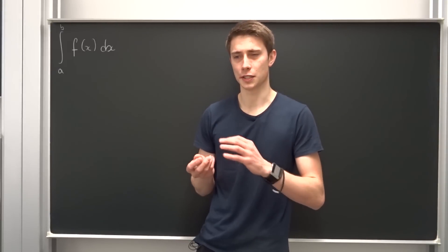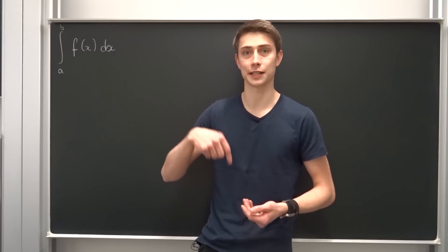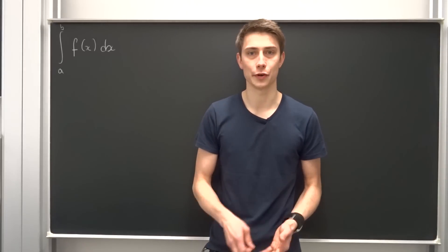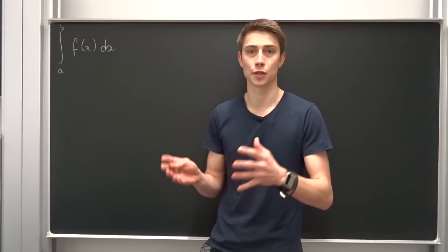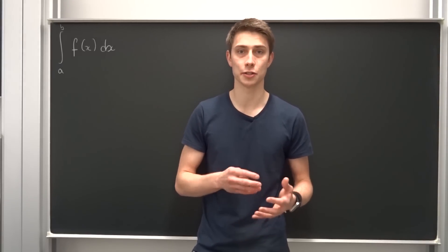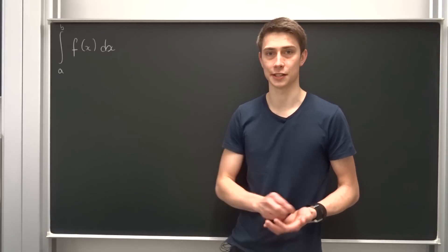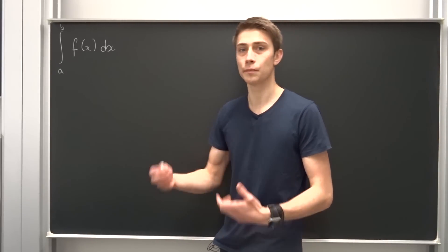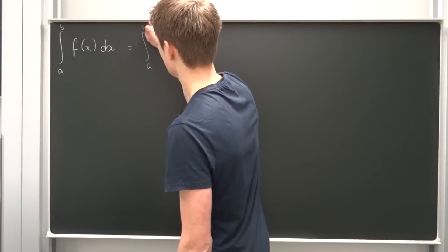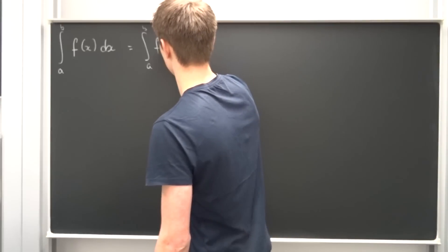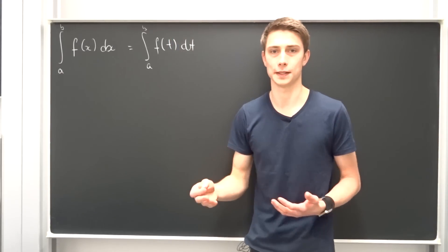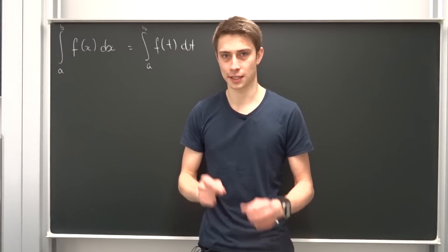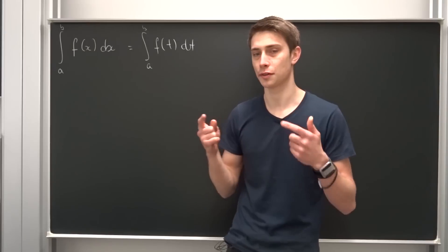Back when I made a video about this weird integral involving all the square roots of trigonometric functions — link in the description, you should check it out — many people were struggling with the idea of dummy variables. They didn't know where this came from, why the original integral was the same as the integral after substituting, and why we could add them together. So let's clear this up today. We are going to say this integral is just this integral right here, changing x to t. This x and this t are just names — they are basically the same thing.